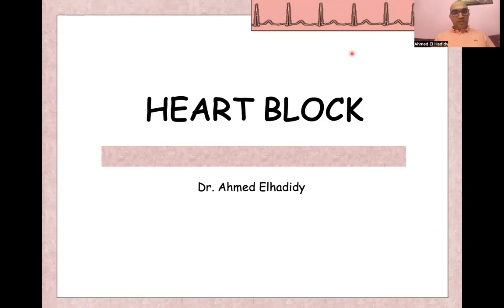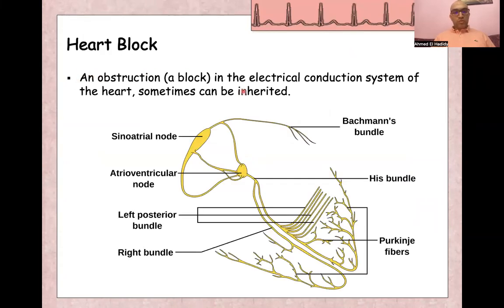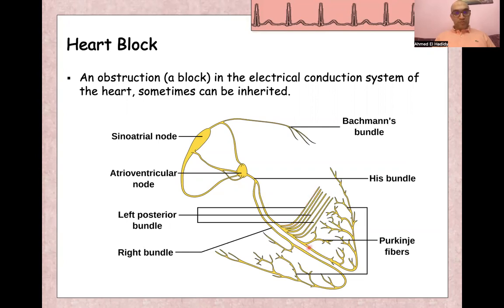When we define heart block, it is an obstruction or block in the electrical conduction system of the heart, starting from the SA node, AV node, bundle of His, right bundle branch, and left bundle branch, which is then split into the left posterior fascicle and left anterior fascicle. A block can occur anywhere in the conduction system. When we say 'heart block' generally, it means AV nodal block.